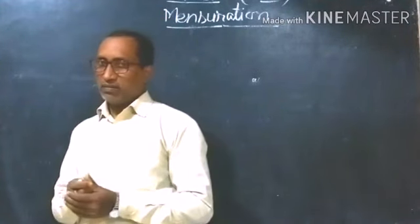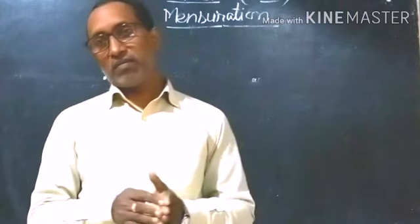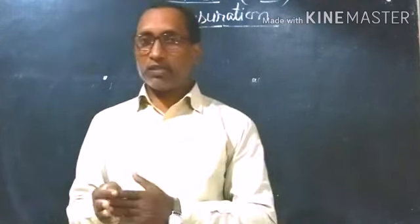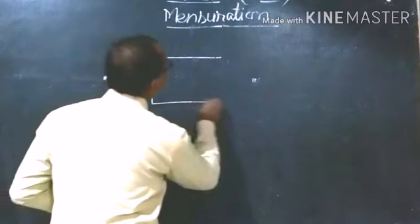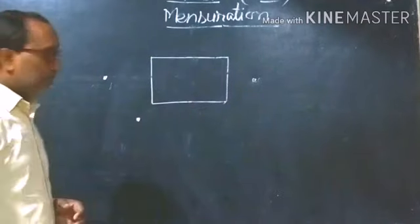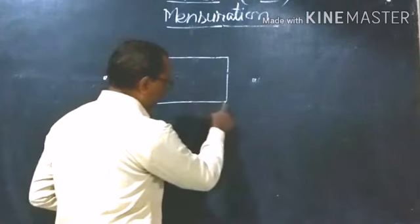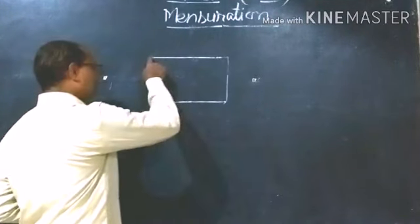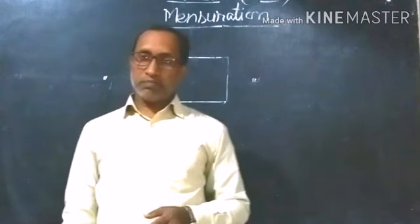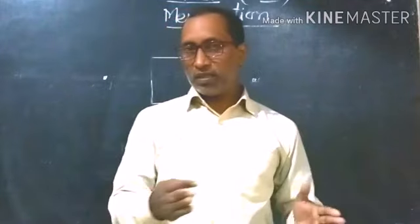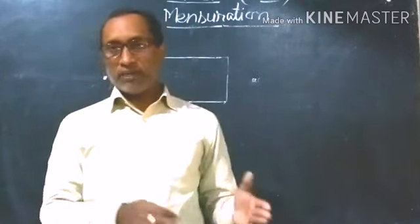In plane figures, we want to know what is perimeter. Perimeter means the length of the boundary of the figure. For a rectangle, the perimeter is length plus breadth plus length plus breadth, so the formula is 2(L + B). Perimeter of a square is 4 times the side. Perimeter of a triangle is the sum of all the sides.